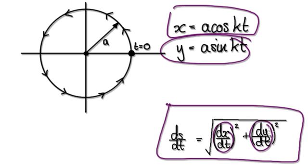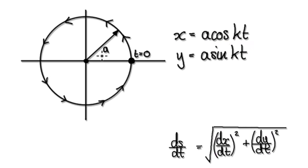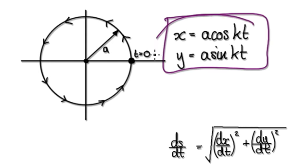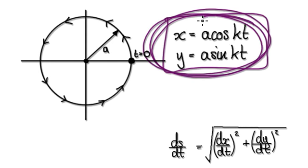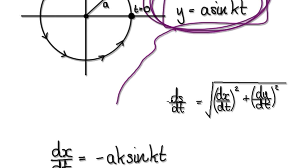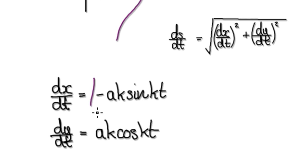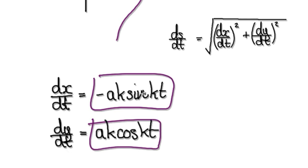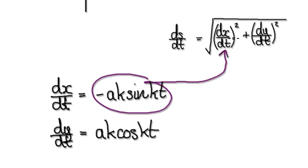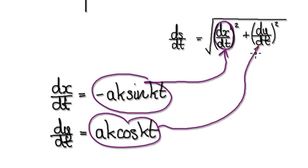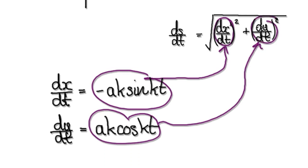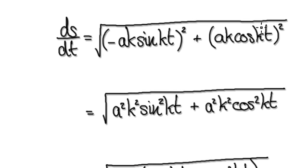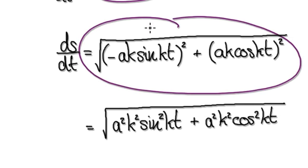So if you want to change the speed of the particle, adjust your parametric equations to something looking like this. If you do that, then dx/dt would be given by this, and dy/dt would be given by this. So now we can put this into here, and then we can put this into here. That would then give you this.